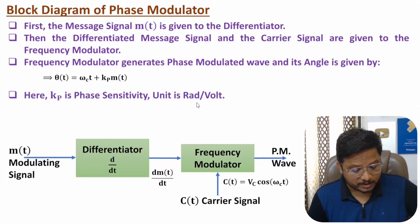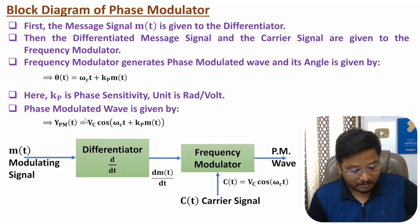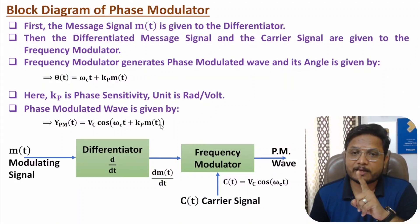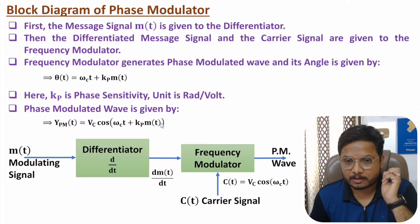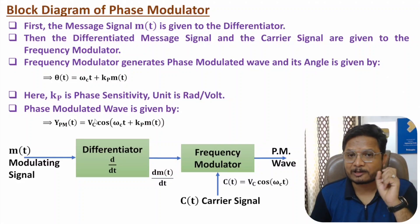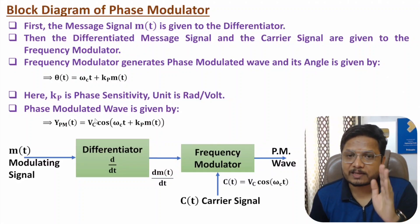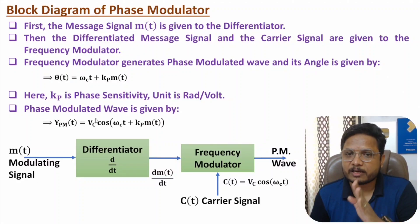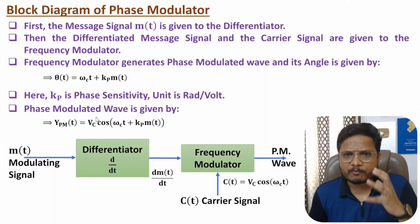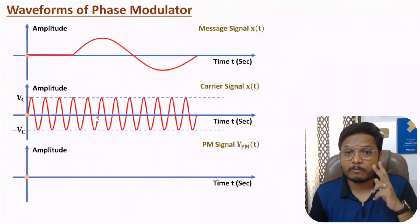The phase modulated wave has angle θ(t) = ωc·t + kp·m(t), where kp is phase sensitivity with unit radian per voltage. The phase modulated wave is vc·cos(ωc·t + kp·m(t)). In angle modulation, the amplitude of the carrier remains constant. So the carrier has amplitude Vc and the phase modulated wave also has amplitude Vc — only the phase changes with respect to the message signal.